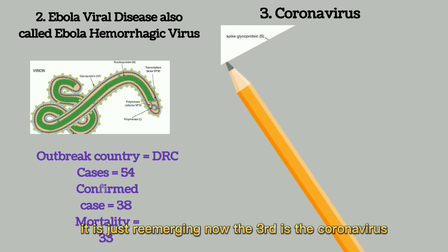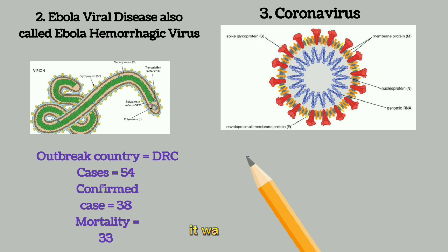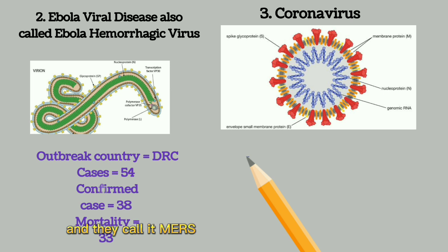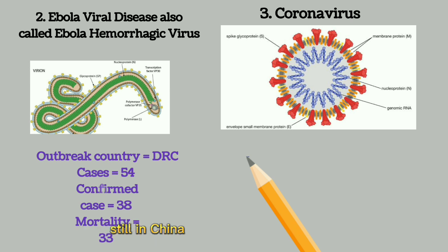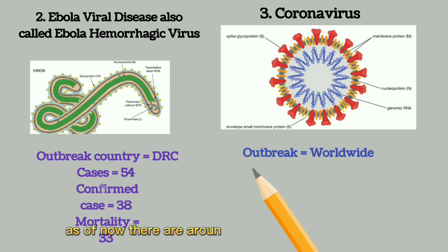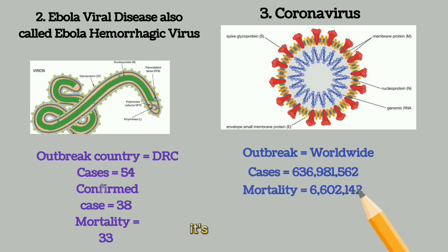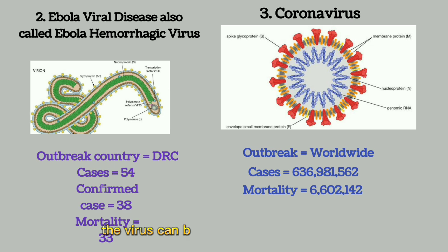The third is the coronavirus. Coronavirus was initially called SARS, then it mutated and started infecting Arabians and Asians, and was called MERS — Middle East Respiratory Syndrome. Later, the virus re-emerged in 2019, still in China, but with different symptoms, different infectivity, and different mortality. As of now, there are around 636 million cases worldwide and 6.7 million confirmed dead, meaning a mortality rate of around 1.2 percent. There are many vaccines, and we hope the virus can be eliminated with time.